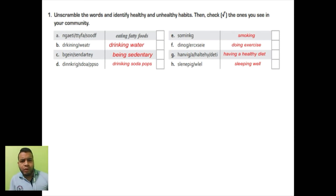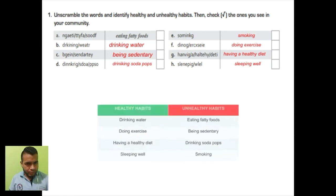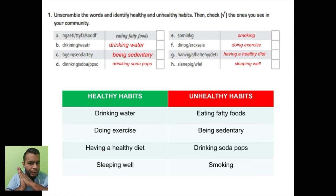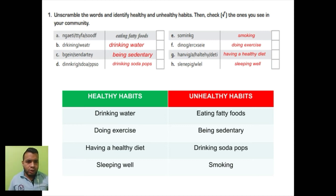Here we have both positive and negative habits. Now we are going to categorize these habits into positive and negative. Let's make two lists. On the left side we have the healthy habits: drinking water, doing exercise, having a healthy diet, and sleeping well. On the other side we have the unhealthy habits: eating fatty foods, being sedentary, drinking soda pops, and smoking.